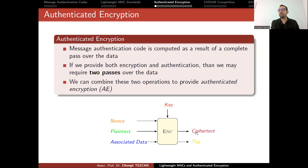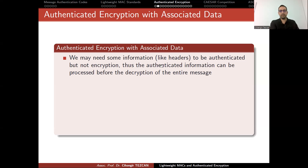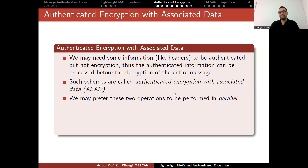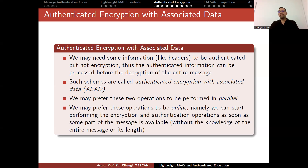As output, we don't only produce ciphertext but also a tag. The inputs are: key, nonce, plaintext, and associated data — only the key is secret. We may need some information like headers to be authenticated but not encrypted, so the authenticated information can be processed before decryption of the entire message. Such schemes are called Authenticated Encryption with Associated Data (AEAD). Associated data is sent as plaintext but is also authenticated. We may also prefer these two operations to be performed in parallel and online — meaning we can start as soon as part of the message is available, without knowledge of the entire message.